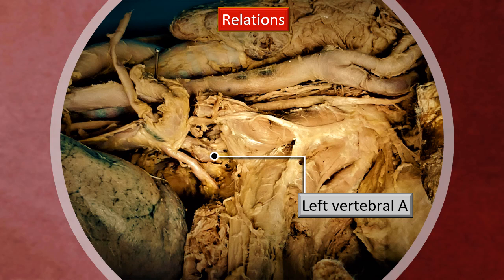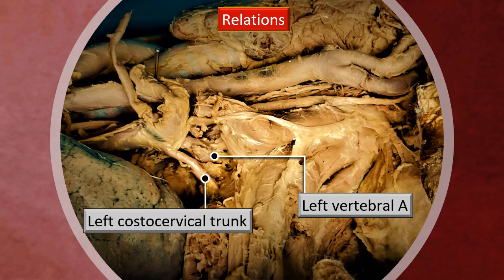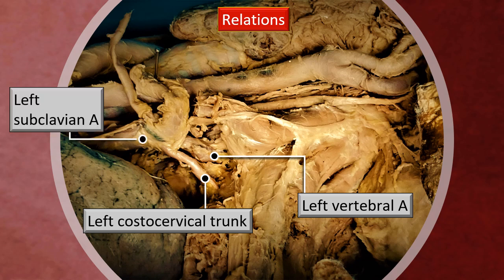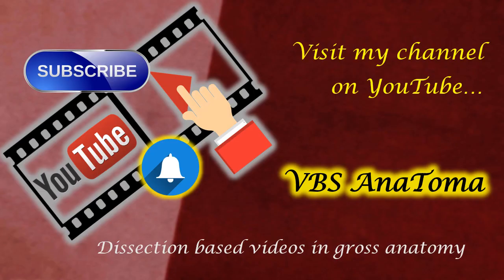Similarly, on the left side — this is a left lateral view — correspondingly you can see the left vertebral artery, the left costocervical trunk, and the stem of the left subclavian artery.